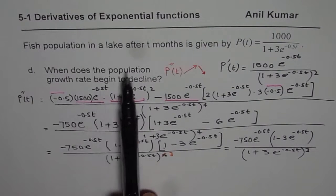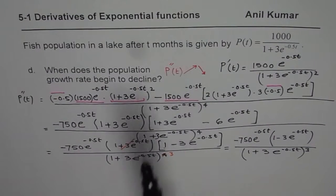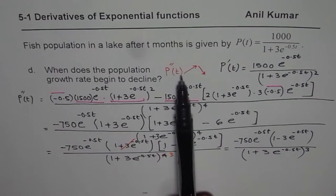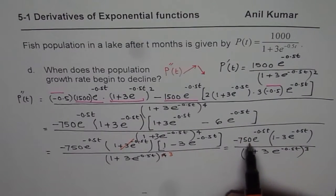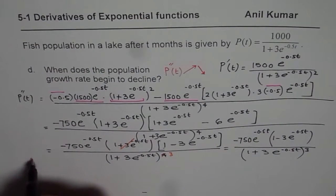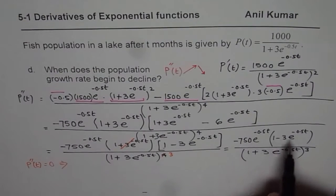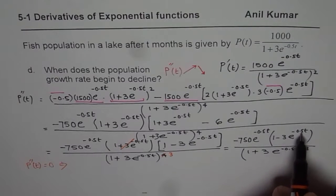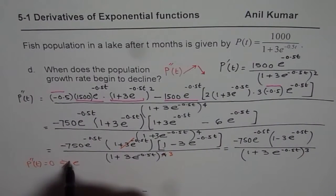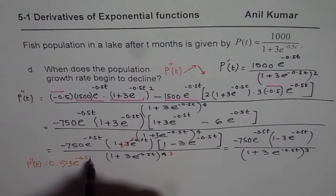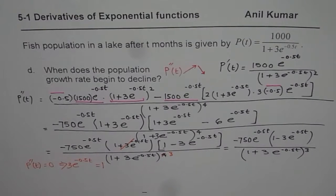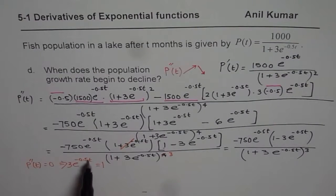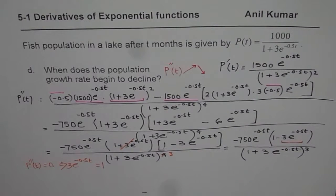We need to find when the population growth rate begins to decline. The point where the second derivative changes from increasing to decreasing is the critical point. Analyzing the second derivative, the denominator cannot be zero, but the numerator part can be zero. So we set the second derivative equal to zero, which implies that 1 minus 3 times e to the power of minus 0.5 t equals zero, meaning 3 times e to the power of minus 0.5 t should equal 1. That becomes a critical point.